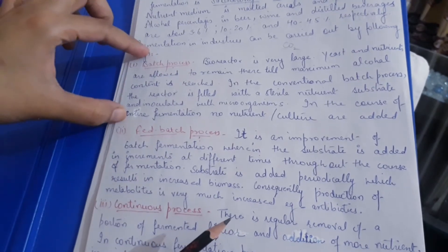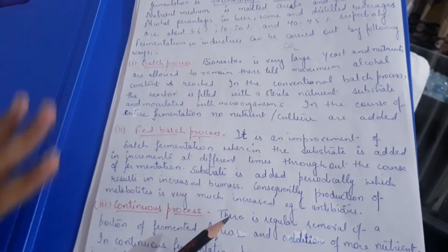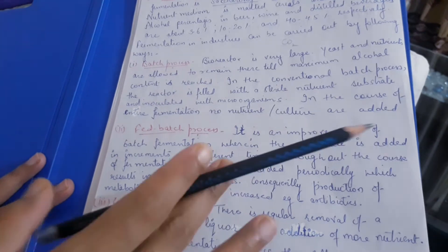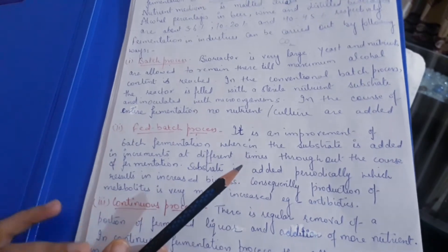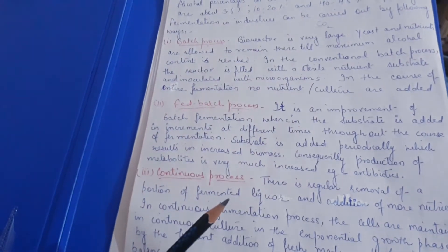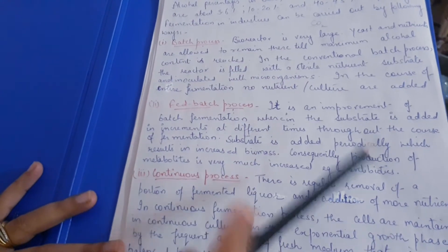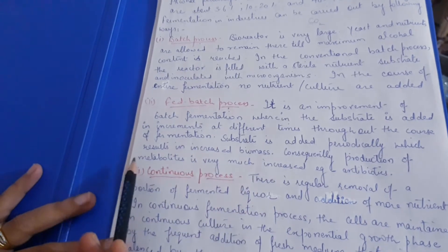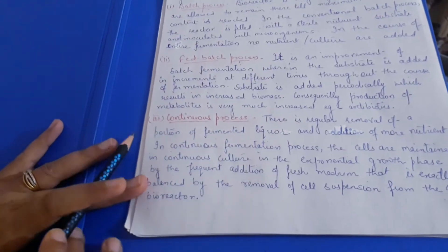In the batch process, you feed the nutrient medium at the start, add yeast, close the bioreactor, and wait until the product is formed. Throughout the process, no nutrients or culture are added. You simply wait from start to end and then harvest the product.